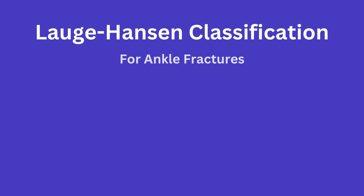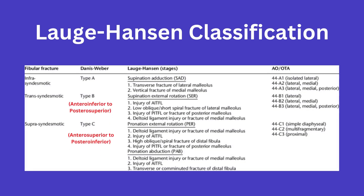There are four categories: supination adduction, supination external rotation, pronation external rotation, and pronation abduction. Here are the four types and their associated fractures or ligamentous injuries. You can pause the video to read each; however, I will go over some helpful associations for each.